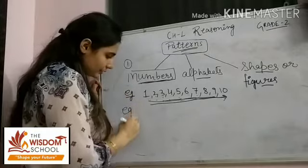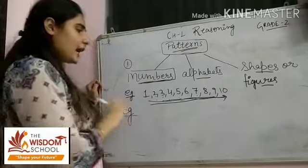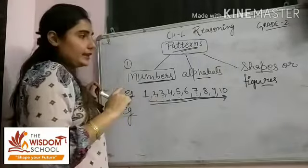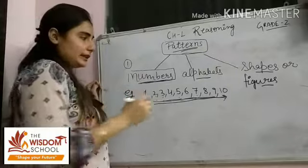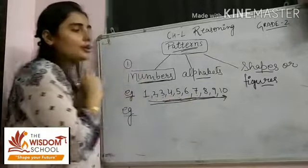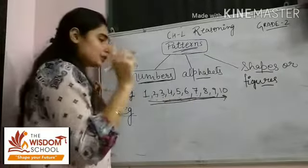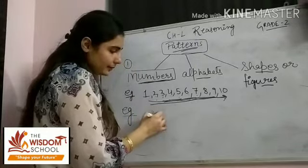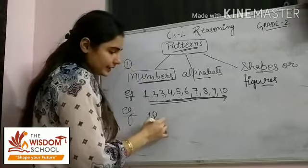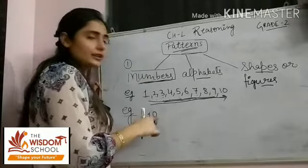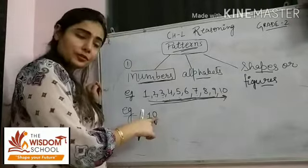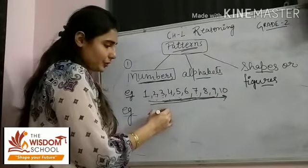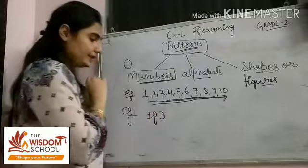Ab yeh jo second example hoga students, yahan par hum baat karenge skip counting ki. Yeh humne yahan normal counting likhi hai. Ab jo skip counting hoti hai bachon, iske andar hum one-one number ko skip kar denge. Jaise one ke baad kya aata hai bachon — two. Toh yahan humne two ko skip kar diya.